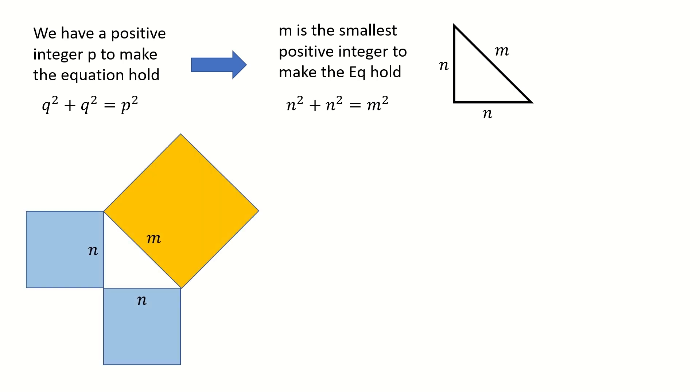We know that n² equals the area of this blue square, and m² equals the area of this yellow square. From the equation n² + n² = m², in geometry, it means the sum of the areas of these two blue squares equals the area of this yellow square.